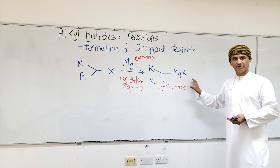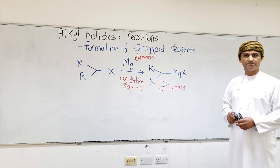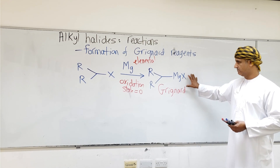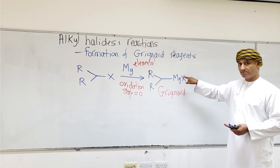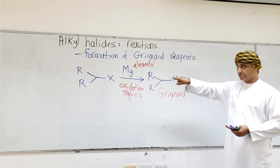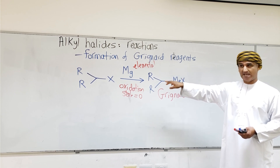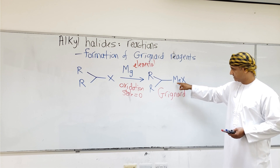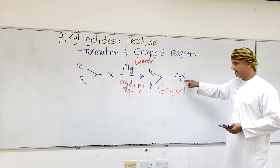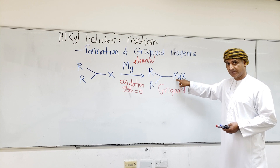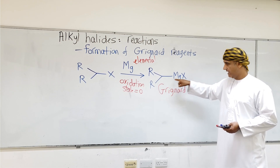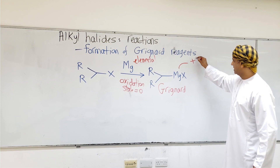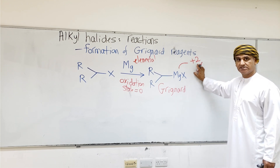Grignard reagents are reagents that contain a carbon-magnesium bond. Magnesium has inserted into the C-X bond in this reaction — you can see magnesium is between carbon and X. The oxidation state of magnesium in the Grignard reagent is therefore plus two.